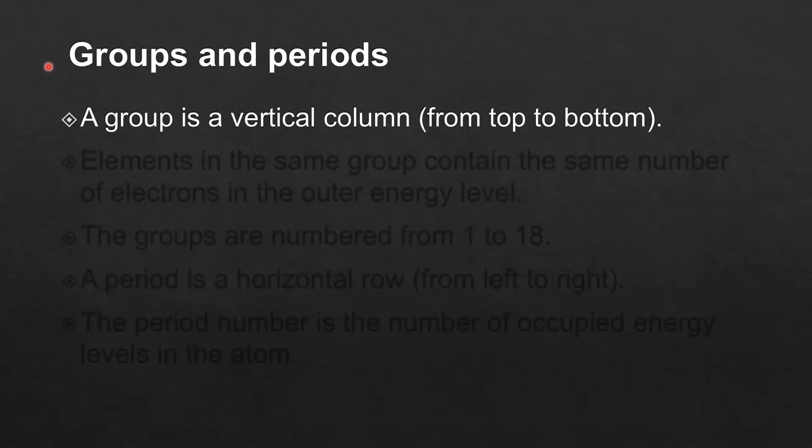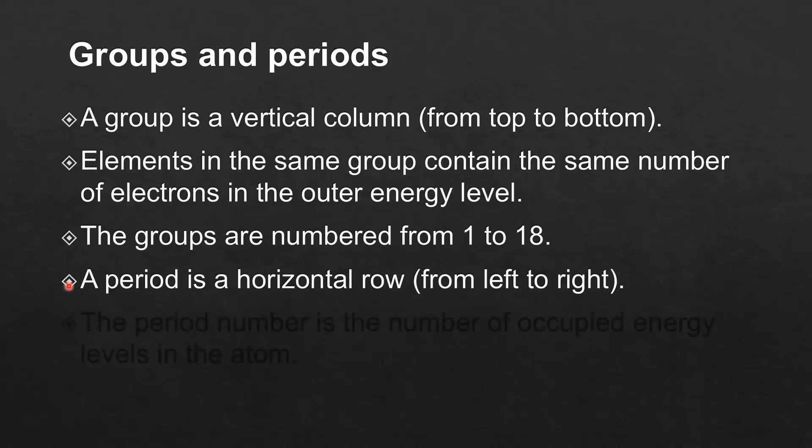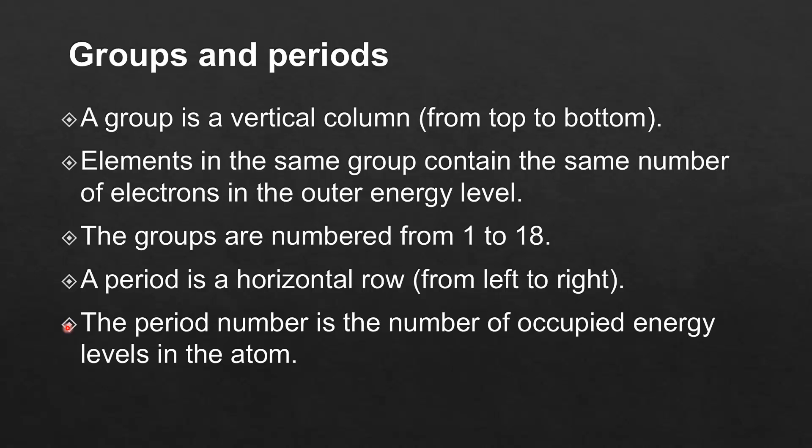Groups and Periods. A group is a vertical column from top to bottom. Elements in the same group contain the same number of electrons in the outer energy level. The groups are numbered from 1 to 18. A period is a horizontal row from left to right. The period number is the number of occupied energy levels in the atom.